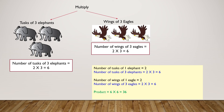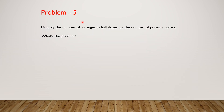Yay! Let's go to another problem. Problem five — last problem. Multiply the number of oranges in half a dozen by the number of primary colors. What's the product? Feel free to pause the video to solve the question yourself.